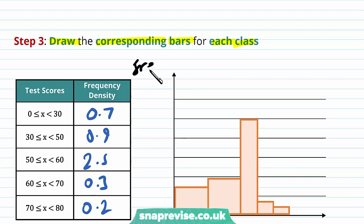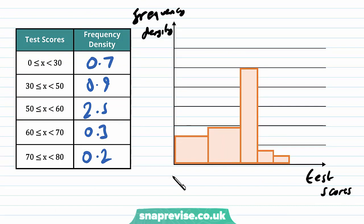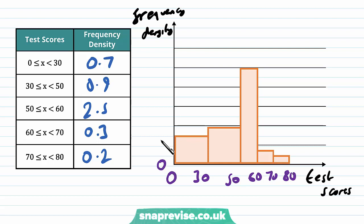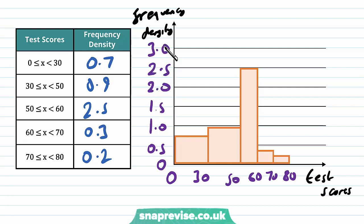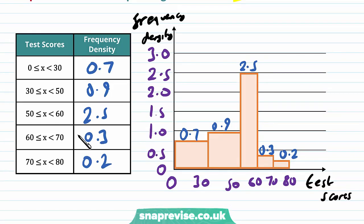Step 3: draw the corresponding bars. We plot frequency density against test scores with class boundaries 0, 30, 50, 60, 70 and 80 on the horizontal axis, and frequency density values 0, 0.5, 1.0, 1.5, 2.0, 2.5 and 3.0 on the vertical axis. We then draw bars with heights 0.7, 0.9, 2.5, 0.3 and 0.2. This is our histogram.